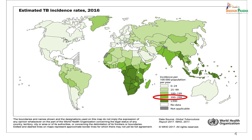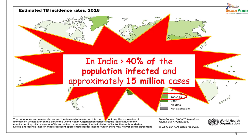The estimated TB incidence rates — this is a 2016 map from WHO — indicates that India has an incidence of 200 to 299 cases per 100,000 population. If we break it up, it means that 40% of our population is infected and approximately there are 15 million cases of TB in our country. You would agree that is a very, very large number.